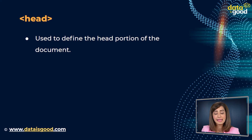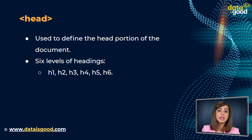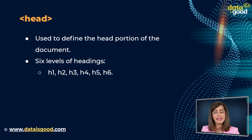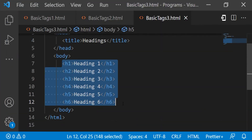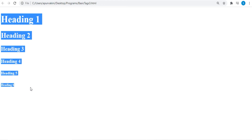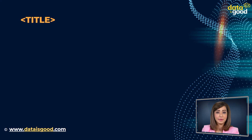The head tag in HTML defines the head portion of the document, which contains information related to the document. We can make use of different headings in HTML. There are six levels of headings: h1, h2, h3, h4, h5, and h6. Whenever we display any heading, the browser adds one line before and one line after that heading. After saving this file, we can see the different types of headings shown in the output.